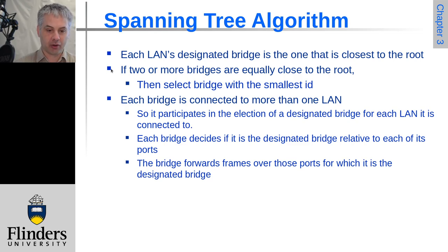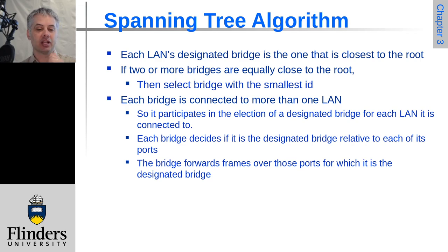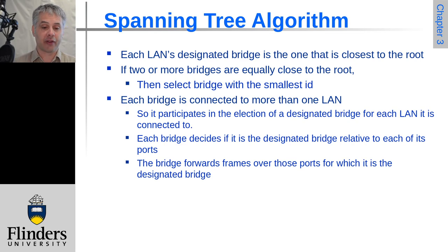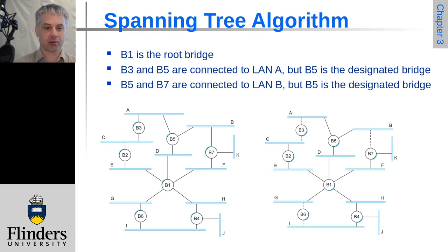Since bridges are connected to multiple LANs, each bridge participates in the election for the designated bridge for each LAN it's connected to. Each bridge can deterministically decide if it is the designated bridge for that link because the algorithm is deterministic — everyone knows the rules and no arbiter is needed. Each bridge can work out the election result and behave accordingly, then forwards frames only over those ports for which it is the designated bridge, and that's what actually breaks the loop.